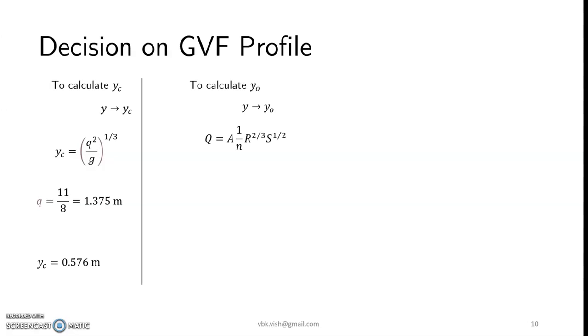So we will calculate y0 now. As usual y0 is calculated with the help of trial and error method which is performed on this equation. So if we do that we will get y0 equals to 1 meter. Now if you observe here y0 is greater than yc.